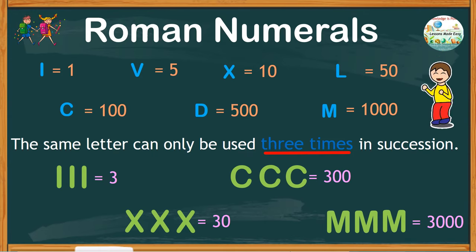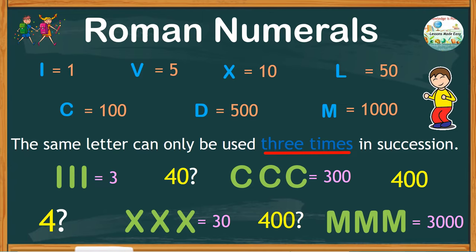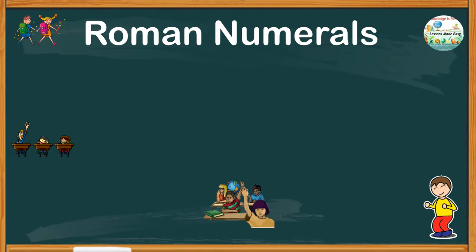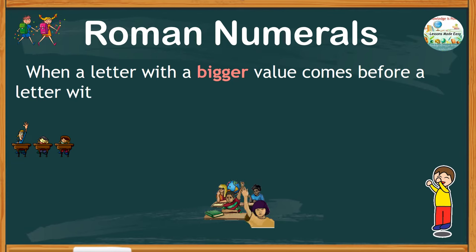But then, you would probably be asking yourself, how do you write 4, 40, 400, or even 4000. When reading and writing numbers in Roman numerals, remember that when a letter with a bigger value comes before a letter with a smaller value, the quantities are added.